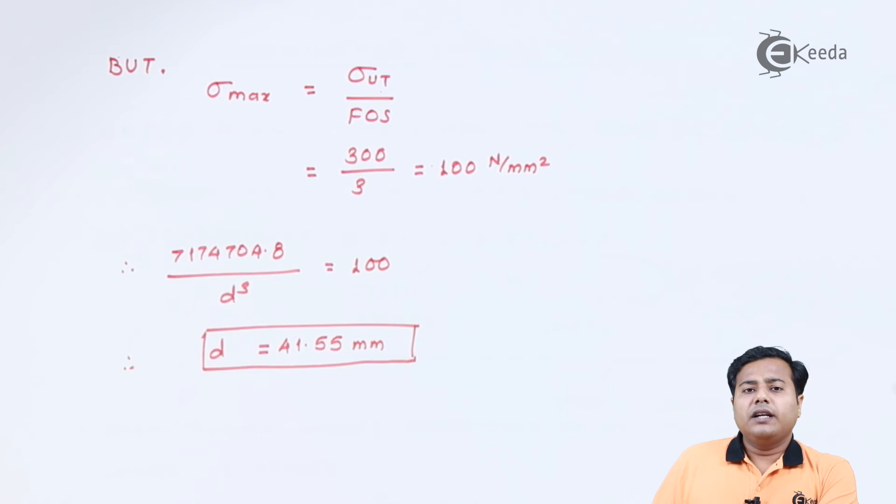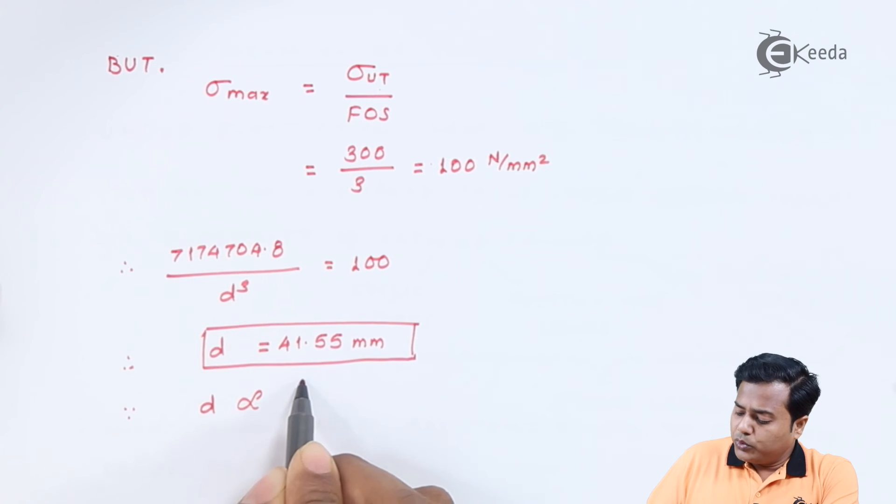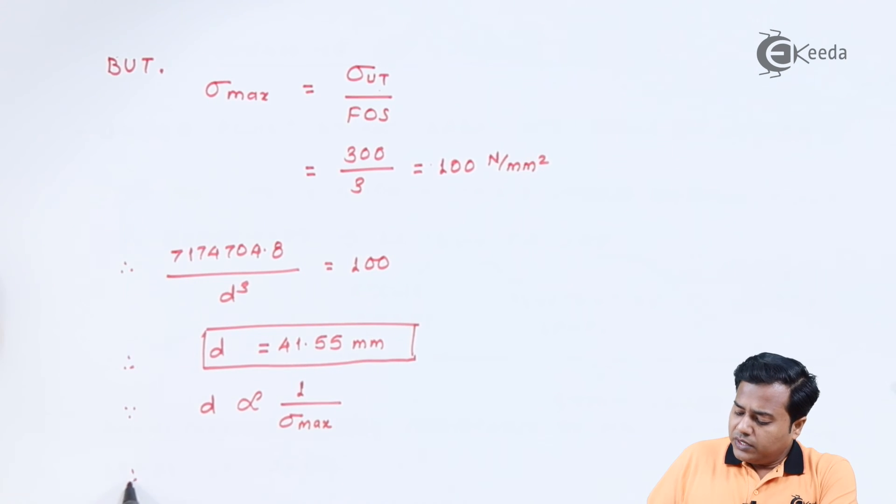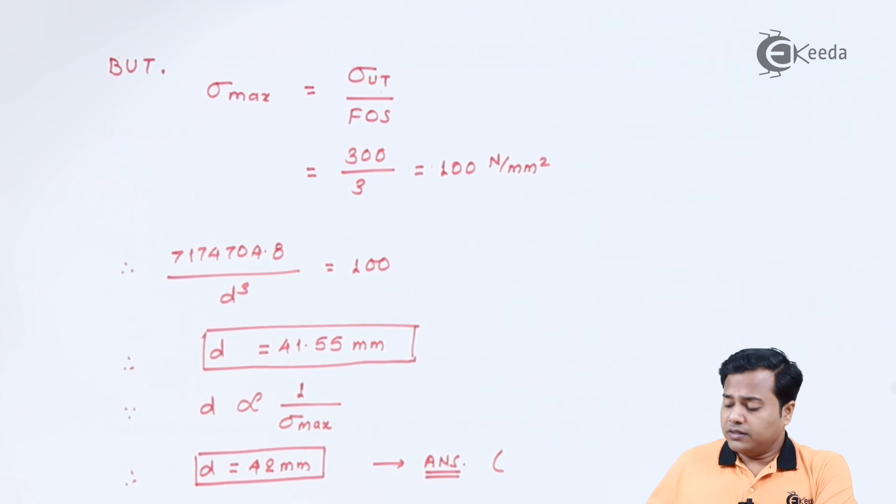Now it's the actual designed value but we need to go for the preferred value. Now it is very clear that the diameter d is inversely proportional with the maximum stress so as the diameter increases the stress decreases and therefore a preferred value of diameter could be 42 millimeter, which is our answer, which is the designed diameter of shaft where the answer gets completed.